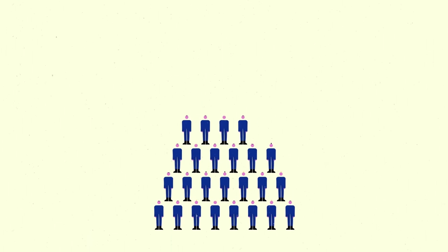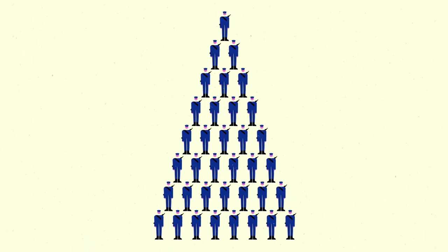But sources of restraint differ based on an armed group's or force's organizational structure. Take hierarchical armed forces and groups. These have obvious signs of discipline, like uniforms and saluting.